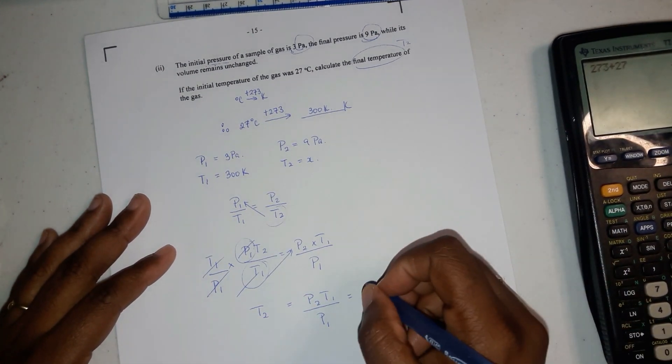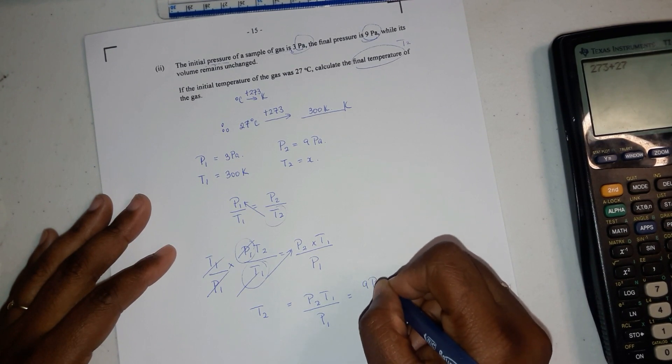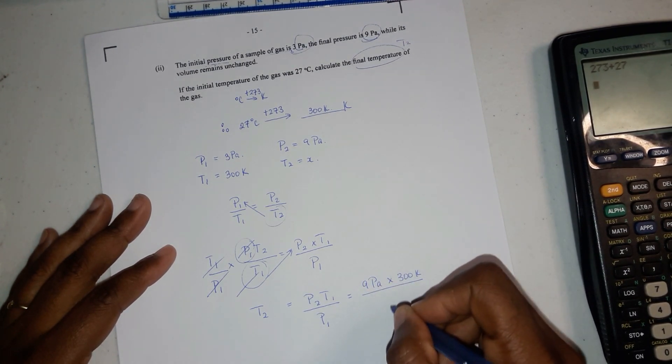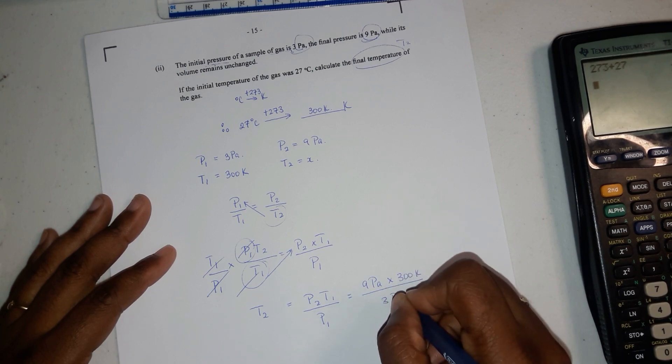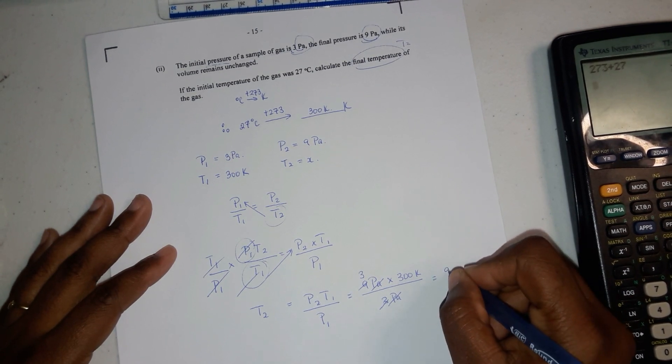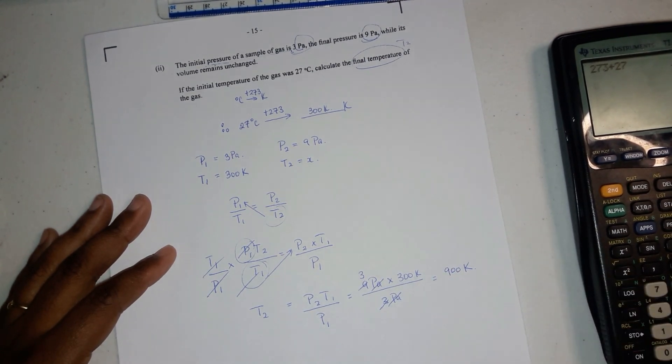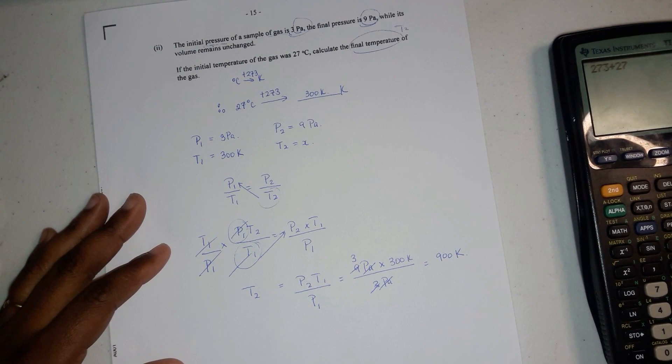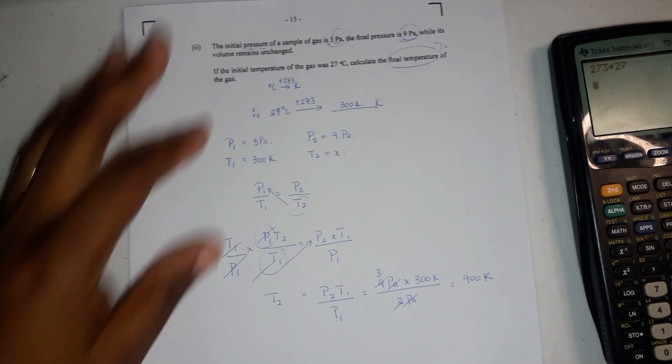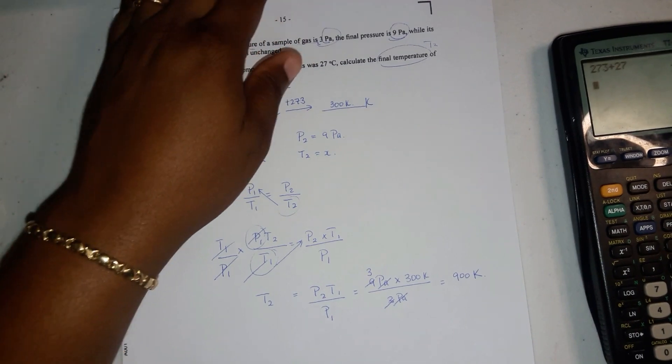Substituting our values, what is P2? 9 pascals. T1, 300 Kelvins, and P1, 3 pascals. And now we're left with 900 Kelvins. I hope this helped you. See you around for question number five. We're soon finished.